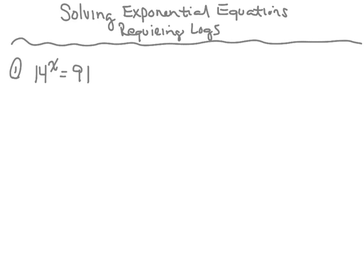Let's continue looking at solving exponential equations using logs. The first one we have is 14 to the x power is equal to 91. What we're going to do first is rewrite this as a log. I'm going to rewrite it as log base 14 of 91 equals x.